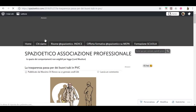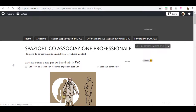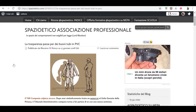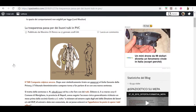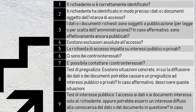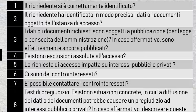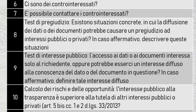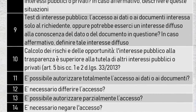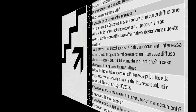Nel corso di formazione presso le pubbliche amministrazioni abbiamo rilevato alcune difficoltà comuni a quasi tutti gli uffici nella gestione delle istanze di accesso civico generalizzato. Ed è per questo che abbiamo deciso di realizzare una checklist, cioè un elenco di domande giuste al momento giusto, da dare in mano agli uffici che gestiscono le istanze. La checklist non decide al posto degli uffici, ma traccia il processo e lo rende replicabile.